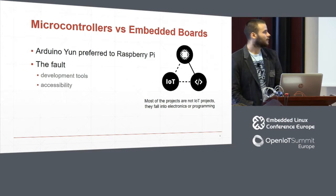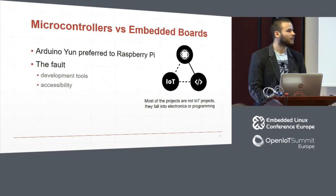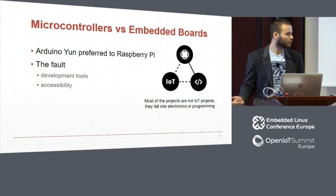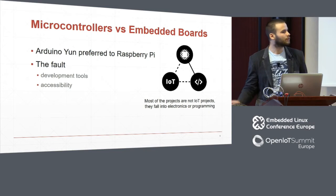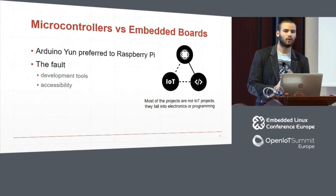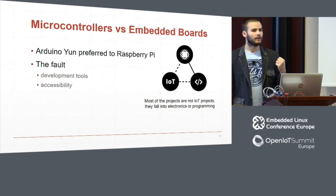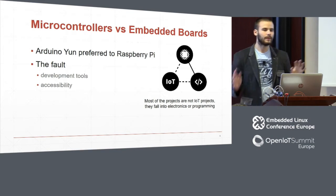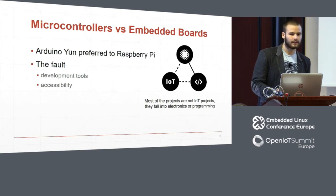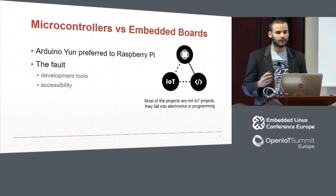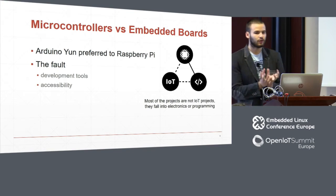Another problem we found is that there are no development tools available for all boards together. If you want to make a program for Raspberry, Udo Neo, Arduino, and Intel, you have to make four separate programs, one for each, with different compiling and different environments. So we wanted to make this into one whole solution — one script to run on every board, and make this accessible.